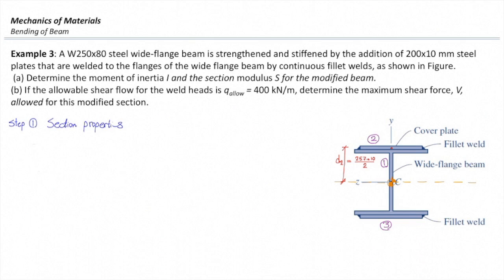We go to the table, look for W250 by 80 steel shape, and we read these numbers. The moment of inertia about the x-axis is 126 million and the height of that section is 257 millimeters.